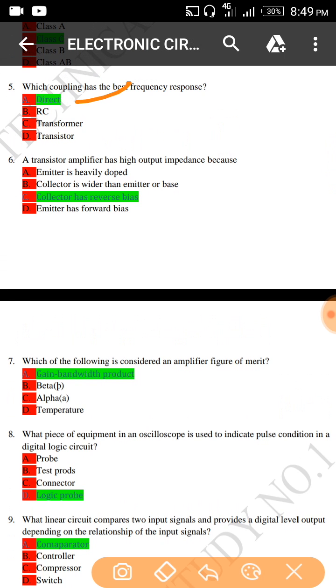A transistor amplifier has high output impedance because the collector has a reverse bias. C is the right answer.